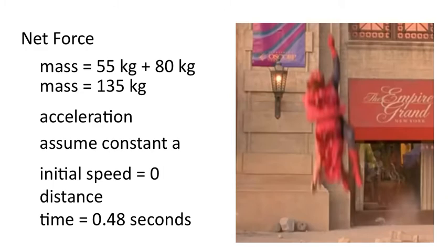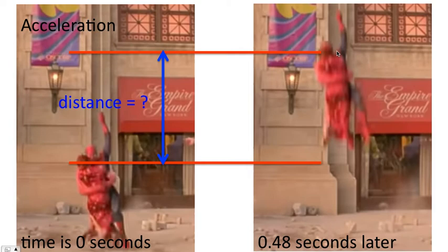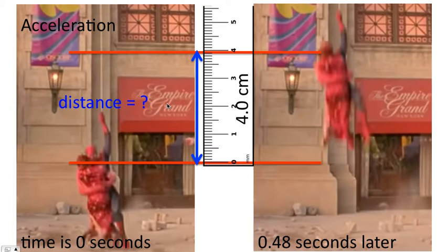Now the challenging part is to get the distance. To get the distance, I'm going to start off by making a line across the shoulders of this character. I've made a similar line here. And our goal is to get that distance. So we use a ruler, and that distance is nearly four centimeters, just below four centimeters.